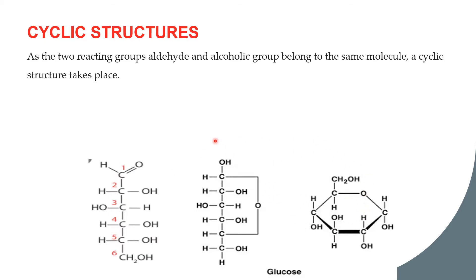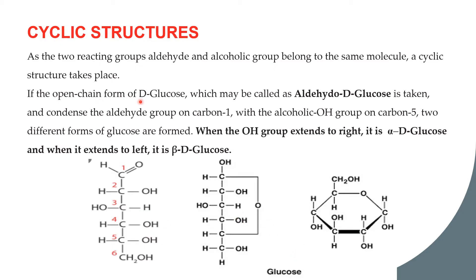Now, how is a straight chain converted into a cyclic structure? If the aldehyde group and the alcohol group belong to the same molecule, cyclization can take place. In the open chain of D-glucose — also called aldehydo-D-glucose — the aldehyde on carbon 1 and the OH of carbon 5 are the two reacting groups. If the OH on carbon 5 is on the right side, the molecule is called D-glucose, and since it contains an aldehyde, it is called aldehydo-D-glucose.